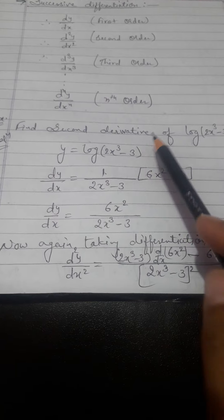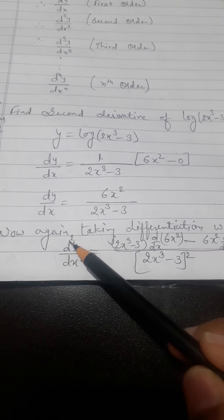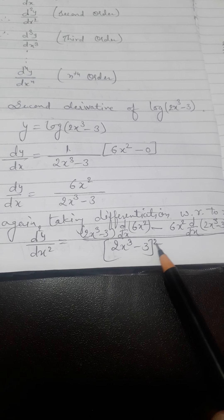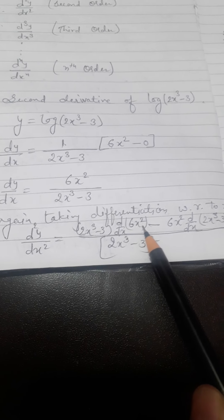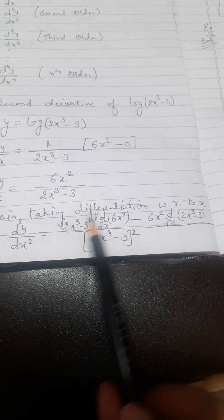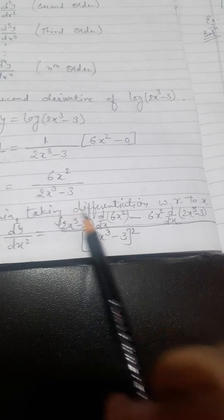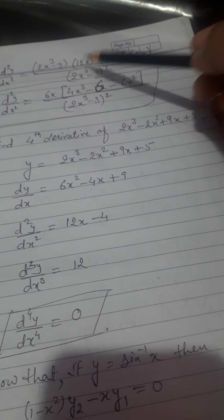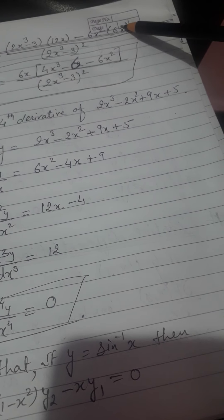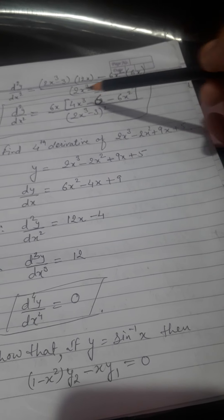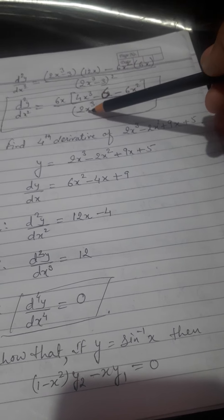Now again I am taking the differentiation to find the second derivative. d²y/dx²: we have two functions in numerator and denominator, so using the quotient rule — denominator squared in the denominator, then denominator times differential of numerator minus numerator times differential of denominator. The numerator is 6x², the denominator is (2x³-3). Differential of 6x² is 12x; differential of (2x³-3) is 6x². Simplifying and taking 6x as common: d²y/dx² = 6x(4x³ - 6 - 6x²) / (2x³-3)². This is the second derivative.